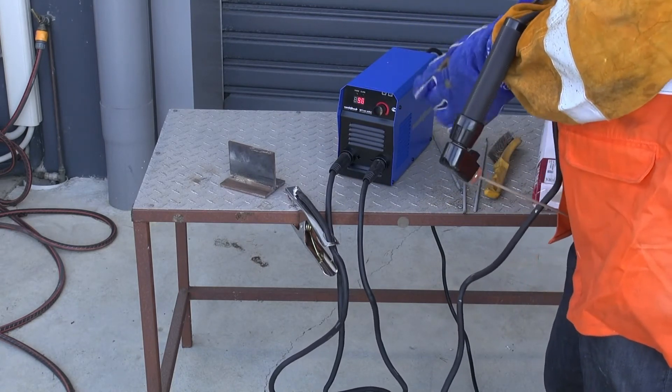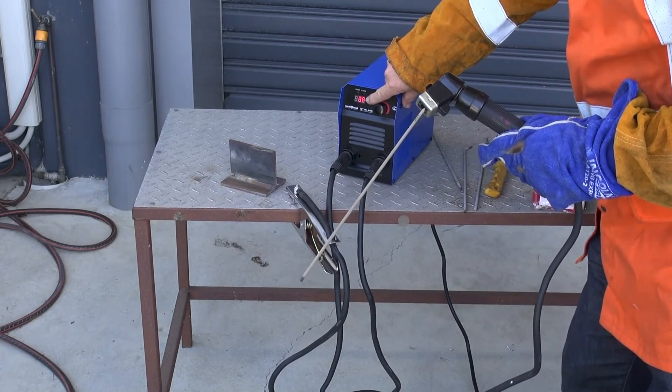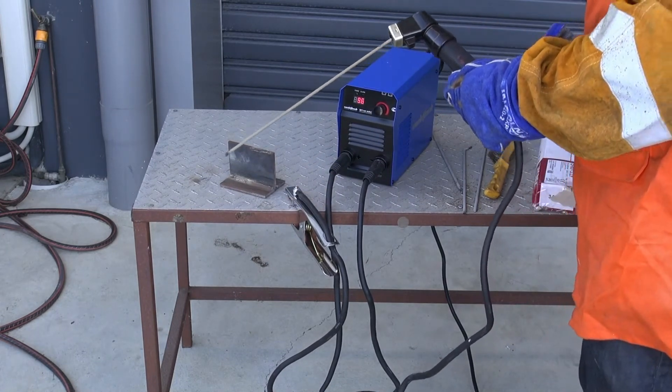I'm using a 2.5 electrode. So as you can see on the little LED screen here, it is set at about 96. So that's what I think is a good amperage to run this little 2.5 electrode.